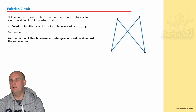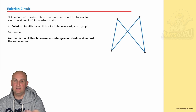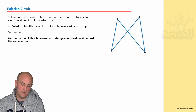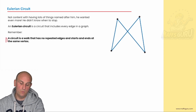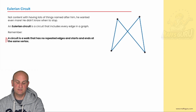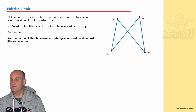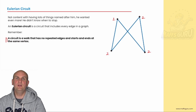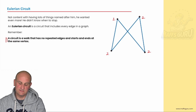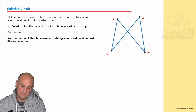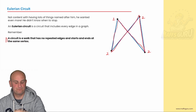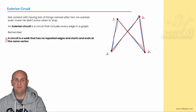What then is an Eulerian circuit? Euler begins with E, so it's got something to do with edges. A circuit is a walk that has no repeated edges and starts and ends at the same vertex. If we look at the degrees of each vertex — degree 2, degree 2, degree 2, and degree 2 — from our previous video on traversability, we know that if they are all even we're going to be able to do this. I can choose any vertex to start at, go up, go along, go up, and then back. The reason it's a circuit is because I'm starting and finishing at the same place.